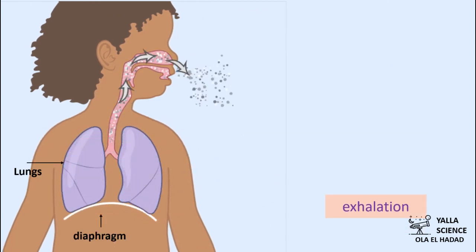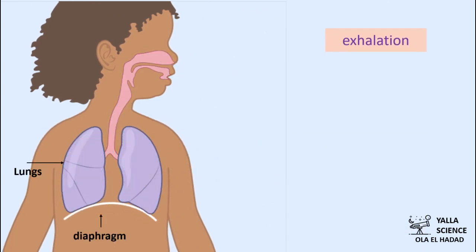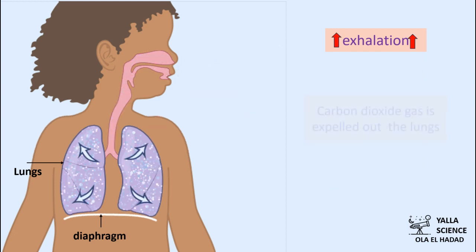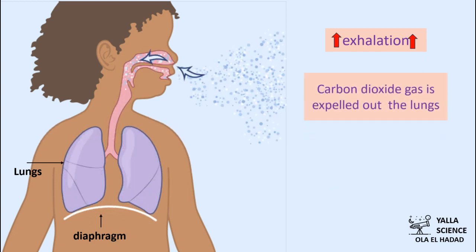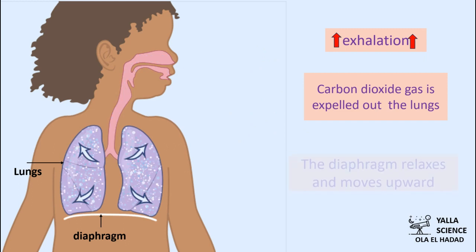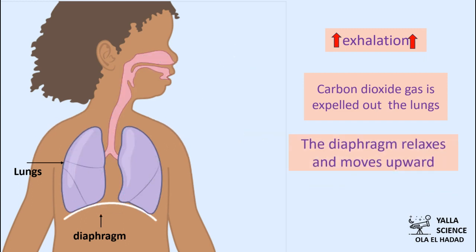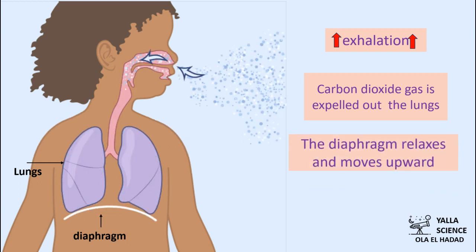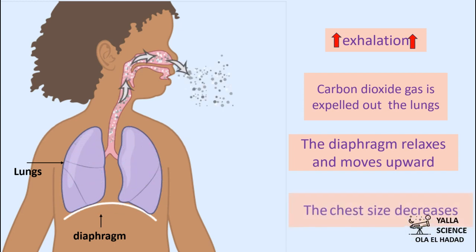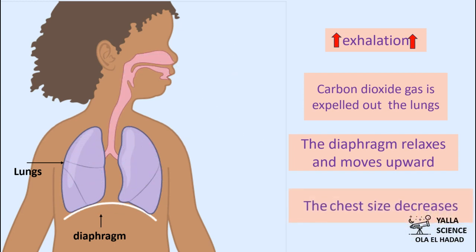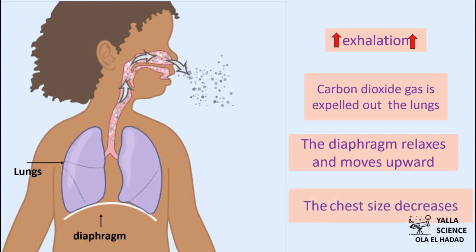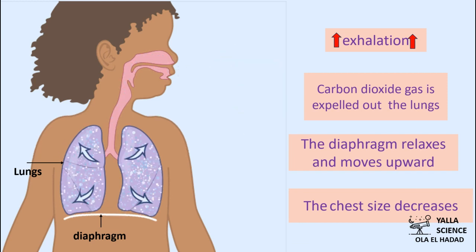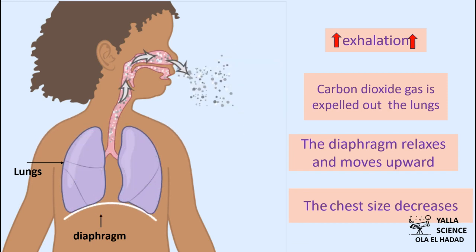During exhalation, when you breathe the air out, the carbon dioxide gas is expelled out of the lungs. The diaphragm relaxes and moves upward, and the chest size decreases. Now, can you tell me how the respiration process takes place?